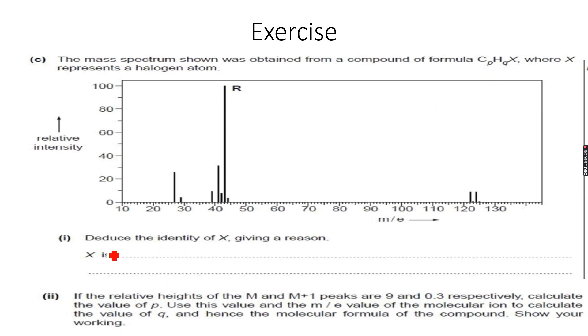This says deduce the identity of X, giving a reason. The first part is that I have to deduce X. X can be either chlorine or bromine. Let's go to our M peak directly.